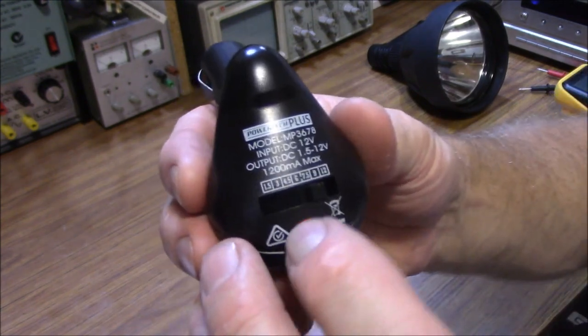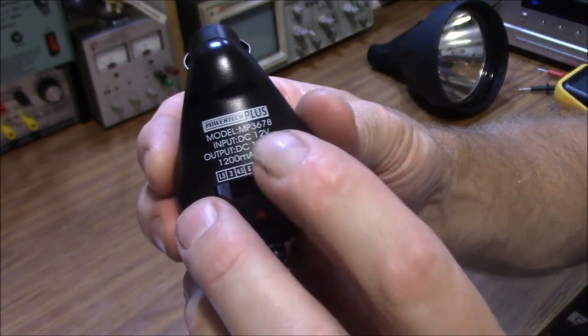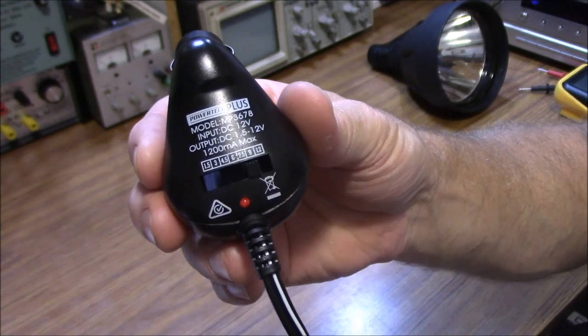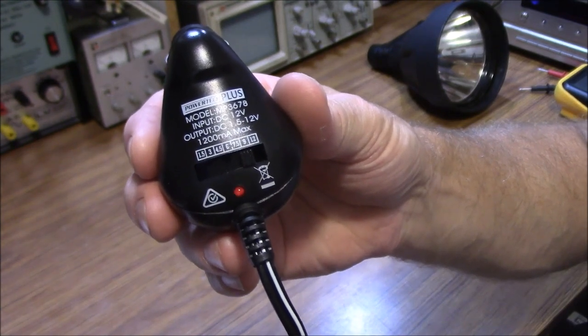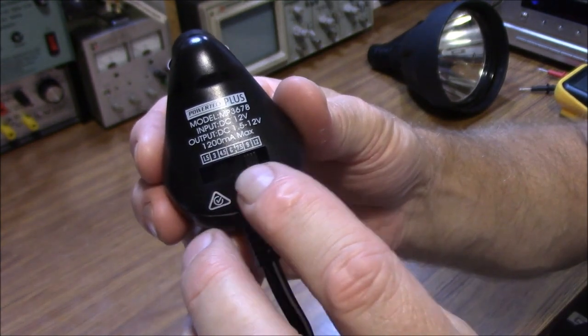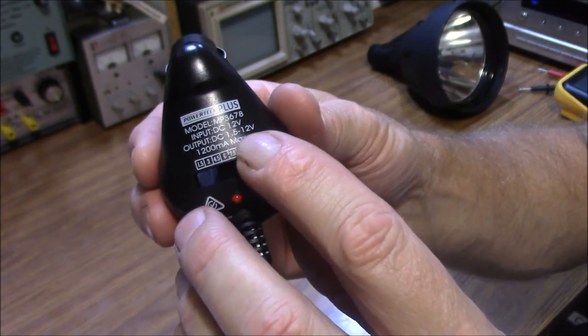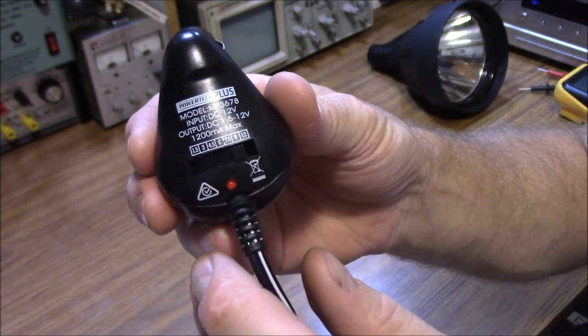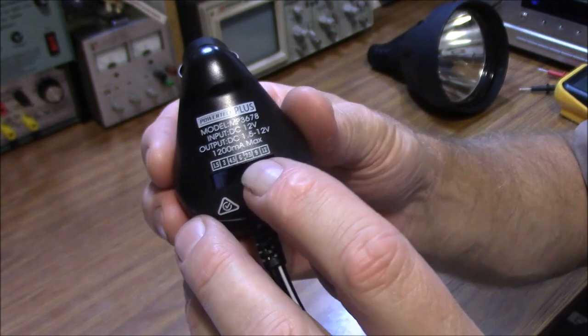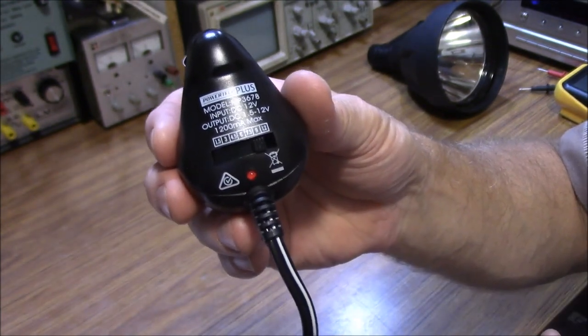It says here that it's 12 volt input, which is what we would normally expect for a car cigarette lighter. But it's an adjustable power output. It says from 1.5 through to 12. Now when I got it, it was set on the 9 volt range. So just keep that in mind.